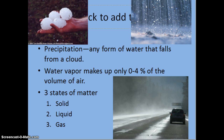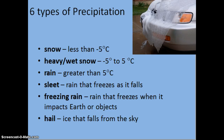When we get clouds, most of the time — but not all — they lead to some form of precipitation. Precipitation is simply any water that falls from a cloud. Water vapor makes up less than 4% of the volume of air in our atmosphere, and precipitation falls in one of three states of matter: solid, liquid, or gas.